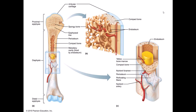Depending on whether we're looking at a long bone or a short, flat, or irregular bone, we use different terminology. The long bones have what we call a shaft or diaphysis, and the two wider, more expanded ends are the epiphyses. For example, this is the humerus — the arm bone. The end making the shoulder joint is the proximal epiphysis, and the end making the elbow joint is the distal epiphysis, connected by the diaphysis between them.